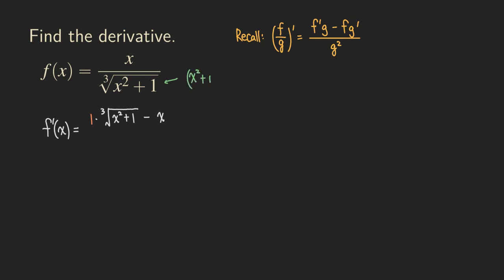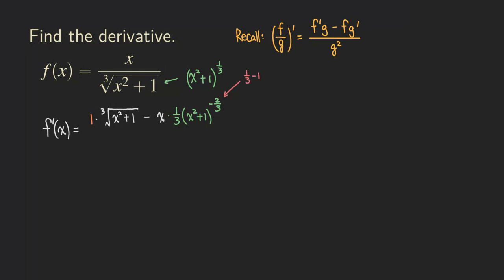The bottom function looks like x squared plus 1 raised to the 1 over 3 power. So now we are going to use the power rule, which gives us 1 over 3, and then x squared plus 1 — this is part of the chain rule — raised to 1 third minus 1, which is negative 2 over 3. Then we still need to multiply by the derivative of the inner function, which is 2x.